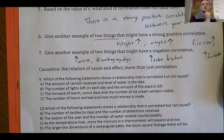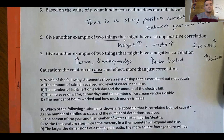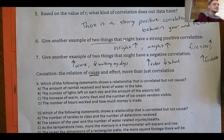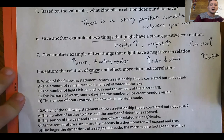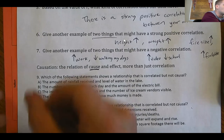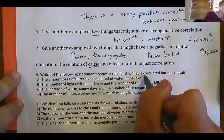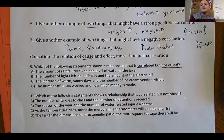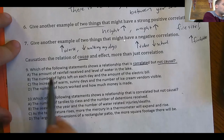I also need to go over the vocab word causation. Causation means that one variable causes the other — not just that the two variables are correlated. Correlation means we have some sort of relationship between them, whereas causation means x directly causes y. Let's go over multiple choice questions to figure out which scenarios are correlation and which are causation. Question 9: which of the following shows a relationship that is correlated but not causal?